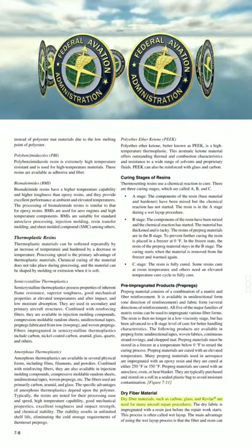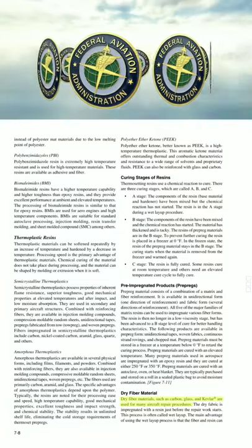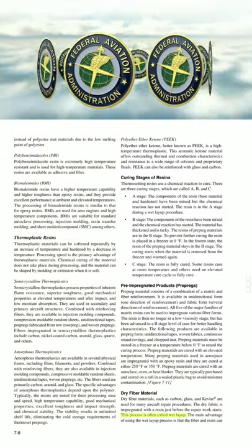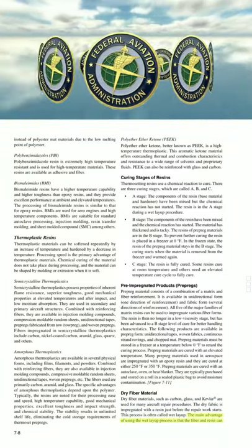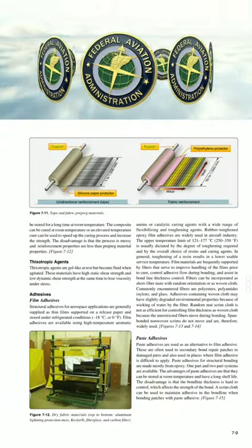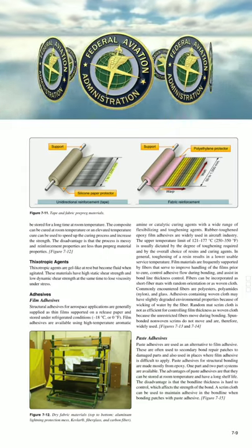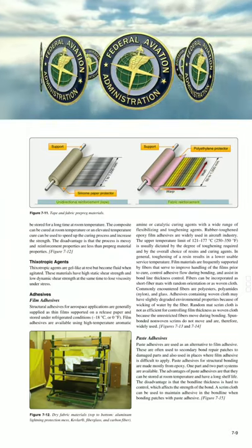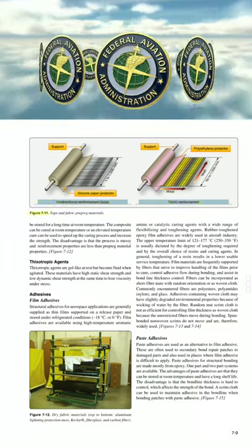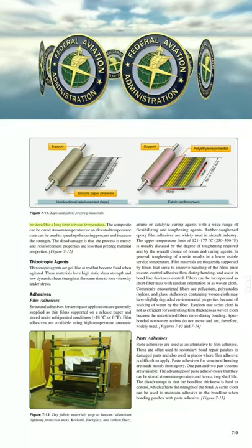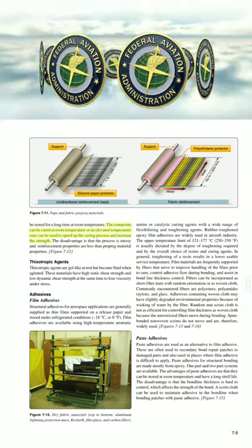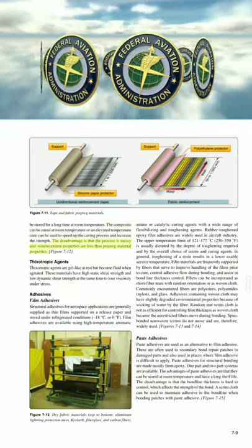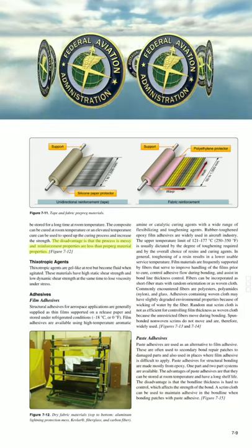Dry fiber material. Dry fiber materials such as carbon, glass, and Kevlar® are used for many aircraft repair procedures. The dry fabric is impregnated with the resin just before the repair work starts — a process often called wet layup. The main advantage of the wet layup process is that the fiber and resin can be stored for a long time at room temperature. The composite can be cured at room temperature, or an elevated temperature cure can be used to speed up the curing process and increase strength. The disadvantage is that the process is messy and reinforcement properties are less than prepreg material properties.